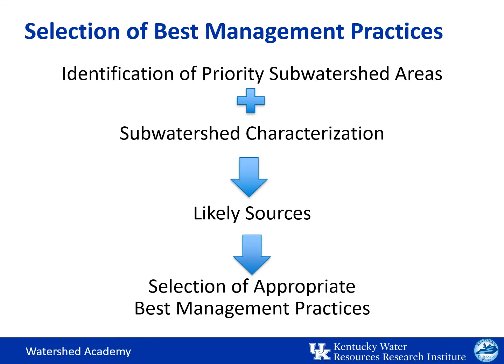To summarize, once you've evaluated the monitoring data and the relevant watershed characteristics, you're then going to prioritize your subwatershed focus areas and identify likely pollutant sources. Then you can begin developing the appropriate best management practice recommendations for that area. This is the stage at which we will approach the next watershed academy module, which will discuss land use impacts to water quality and related best management practices.